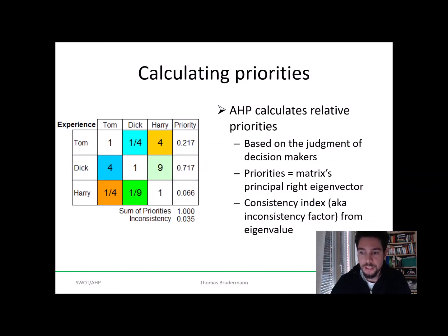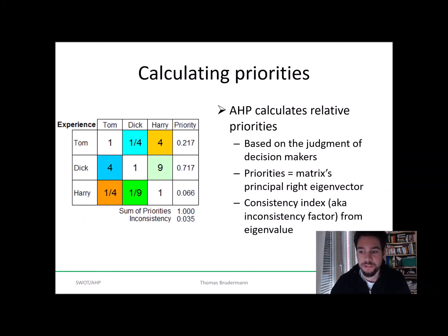The AHP method calculates the relative priorities or performances of all the factors or candidates. This is always based on the judgment of the decision-makers, using the matrix we filled in previously. The priorities that are calculated are essentially the matrix's principal right eigenvector. By processing this matrix mathematically, the Analytic Hierarchy Process derives priorities for the candidates with respect to a criterion — in this case, experience. How this is exactly done will be shown later.